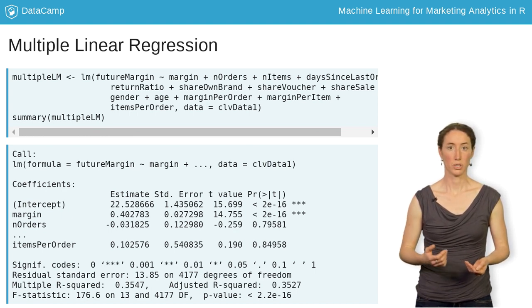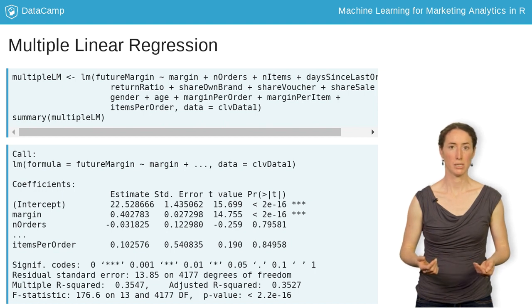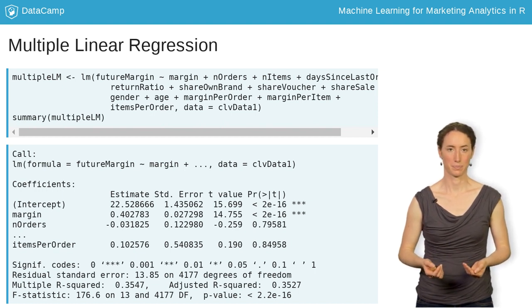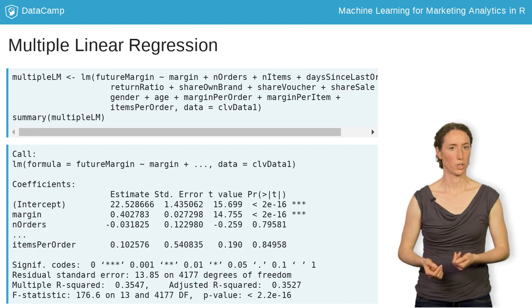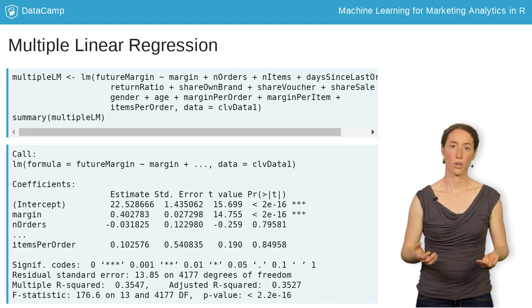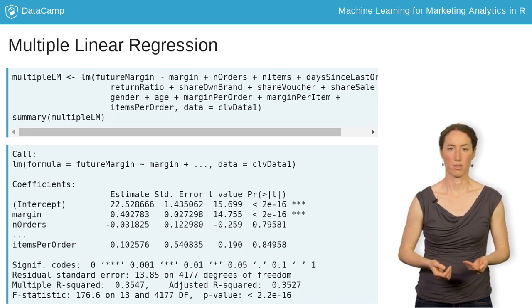Just as before, we use summary, now with multiple lm as an argument. That worked, although we now encounter other problems.